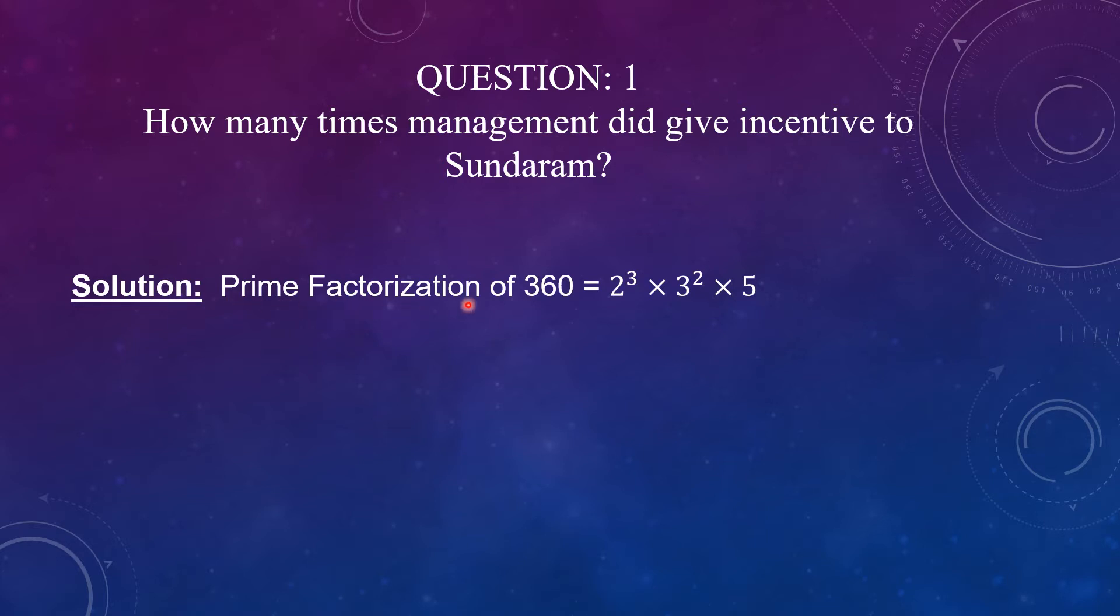Prime factorization of 360 as you all know it will be 2 raised to the power 3 into 3 raised to the power 2 into 5. Where you can see that this 5 is already his initial salary. 5 zeds was initial salary and this much 2 raised to the power 3 into 3 raised to the power 2 is the increment that he got in each month.